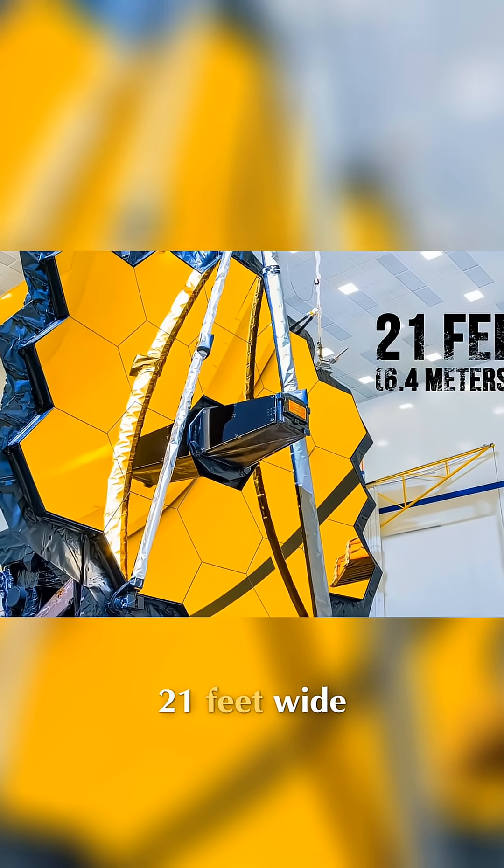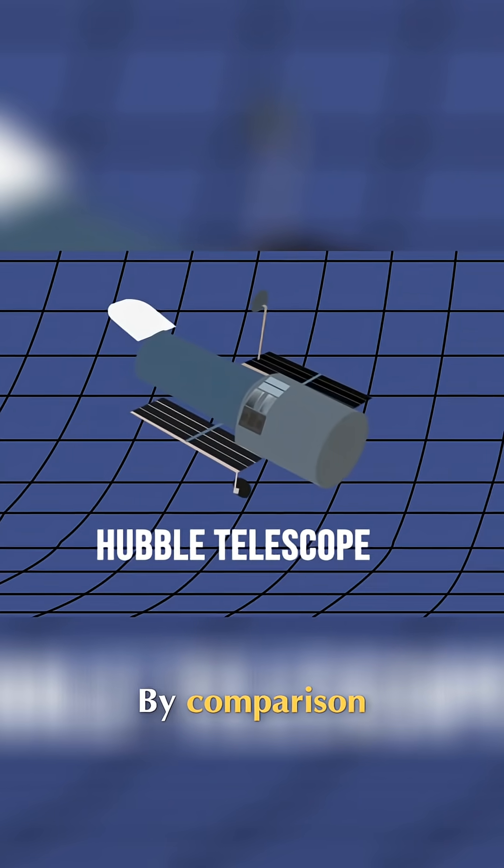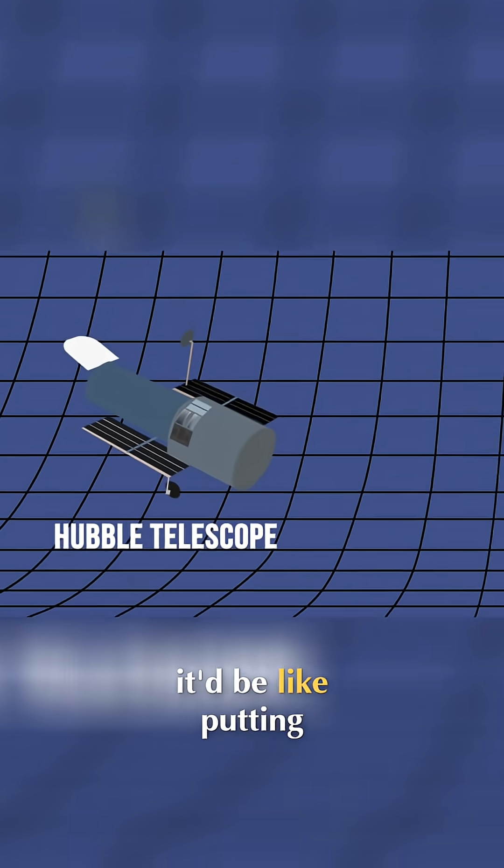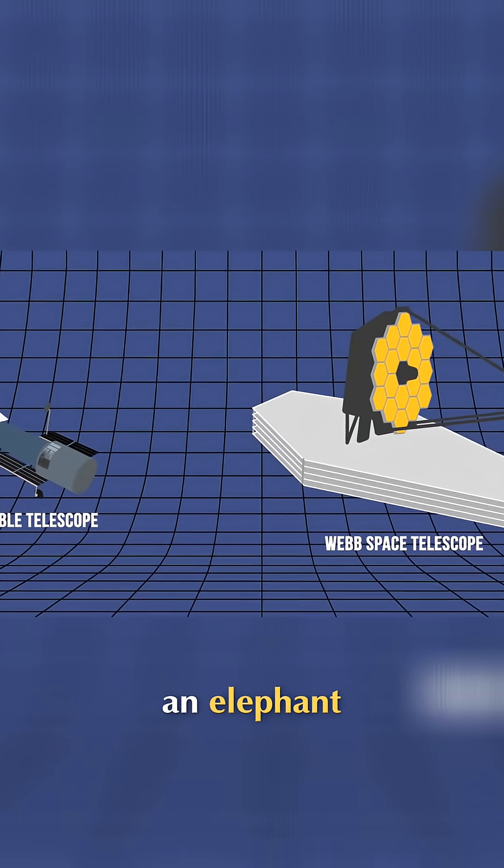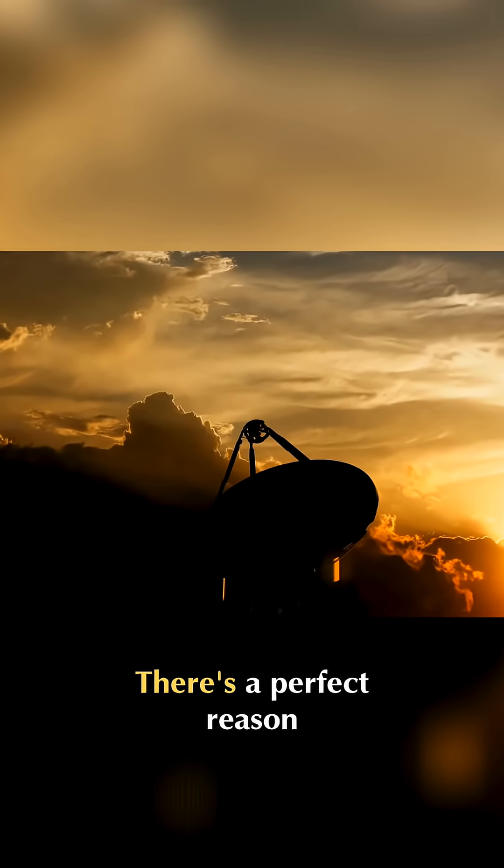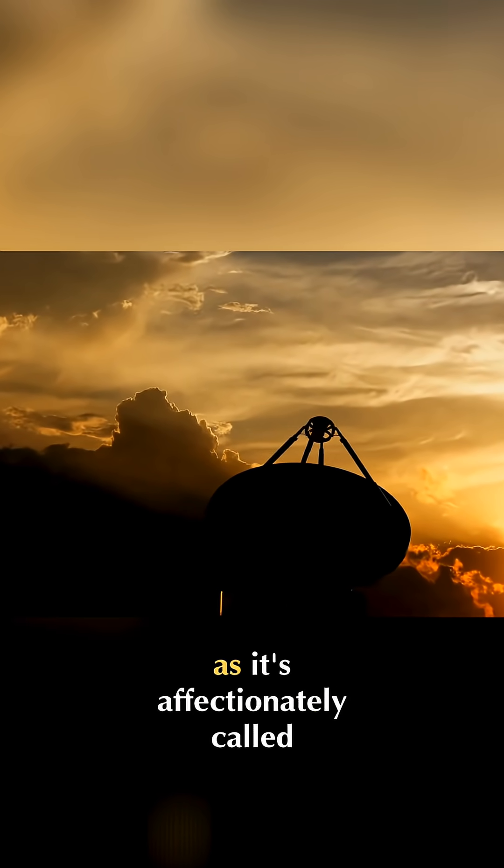is over 21 feet wide. By comparison, if you place the two telescopes side by side, it'd be like putting a horse next to an elephant. And elephants are enormous. There's a perfect reason why the Webb, as it's affectionately